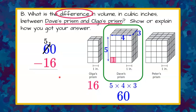10 subtract 6 is 4. 5 subtract 1 is 4, telling me that the difference between Dave's prism and Olga's prism is 44 cubic inches. So Dave's prism is 44 cubic inches more.